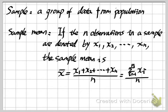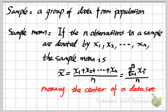By the definition of the sample mean, the meaning of this is the center of the data set. For the mean of a random variable, it is a weighted average of all possible values with respect to the probability. For the sample mean, the meaning is the center of the data set.